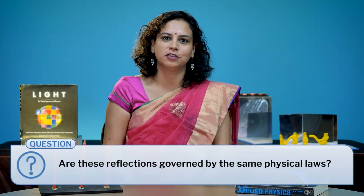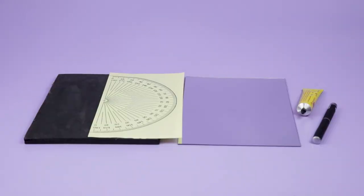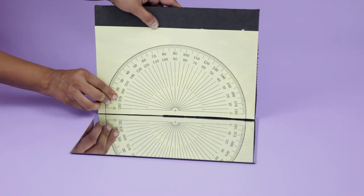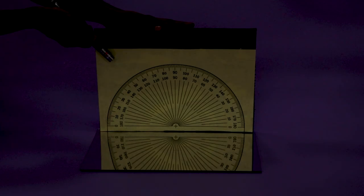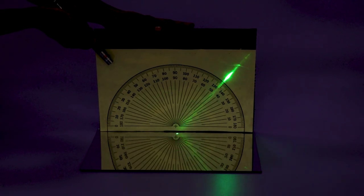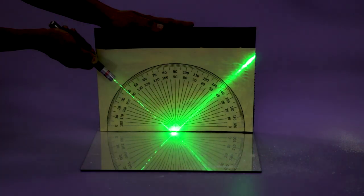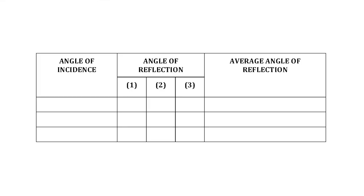We discussed the differences and I posed a question: are these reflections governed by the same physical laws? To answer this, I demonstrated the next activity. For this, we need a printout of a protractor, a plane mirror, and a laser. Stick the printout of the protractor on a foam sheet and stick the plane mirror on the edge of the foam sheet. Now the laser beam falls on the mirror — you can observe the path of light. Measure the reflected angle by changing the incident angle. I asked students to note their observations in a worksheet. At this point, I introduced the terms angle of incidence and angle of reflection.